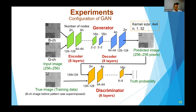The encoder and decoder of the generator each consist of eight layers, and the discriminator consists of six layers. These layers are convolution layers. These values indicate the number of nodes in each layer. M is changed from 1 to 32 as an experimental parameter. These numbers like 128 by 128, 64 by 64, and so on indicate the pixel size of the nodes in the middle layer.